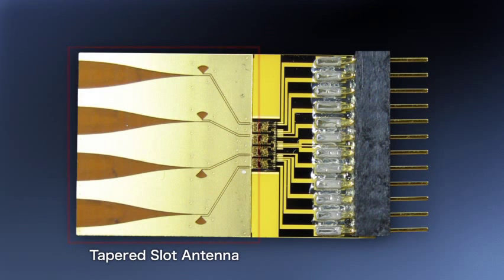This is a tapered slot antenna. It is constructed by placing a metallic thin film on an insulator substrate. Fine directionality has been achieved by optimizing the shape of the slit.